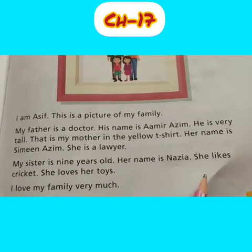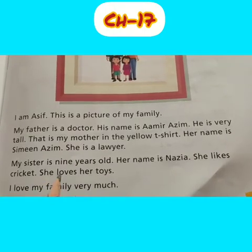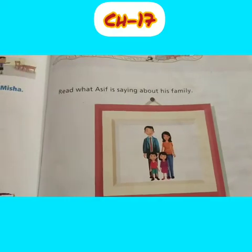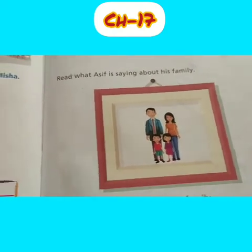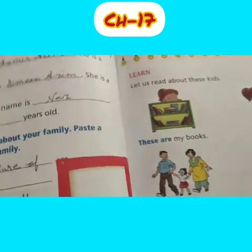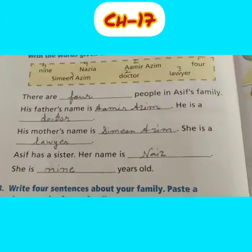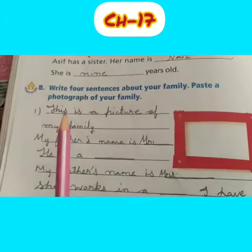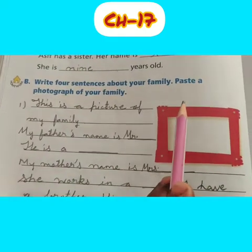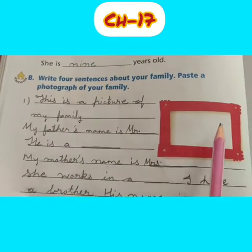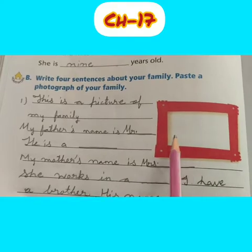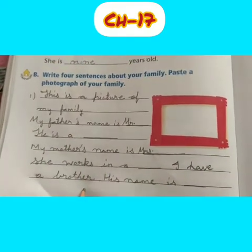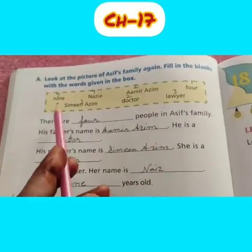My sister is nine years old — her name is Naziya. She likes cricket and she loves her toys. So this is the topic 'My Family'. Like this, you also have to write about your own family. Write four sentences about your family and paste your picture on top — about papa, mummy, brother, sister — like this, you fill that work.